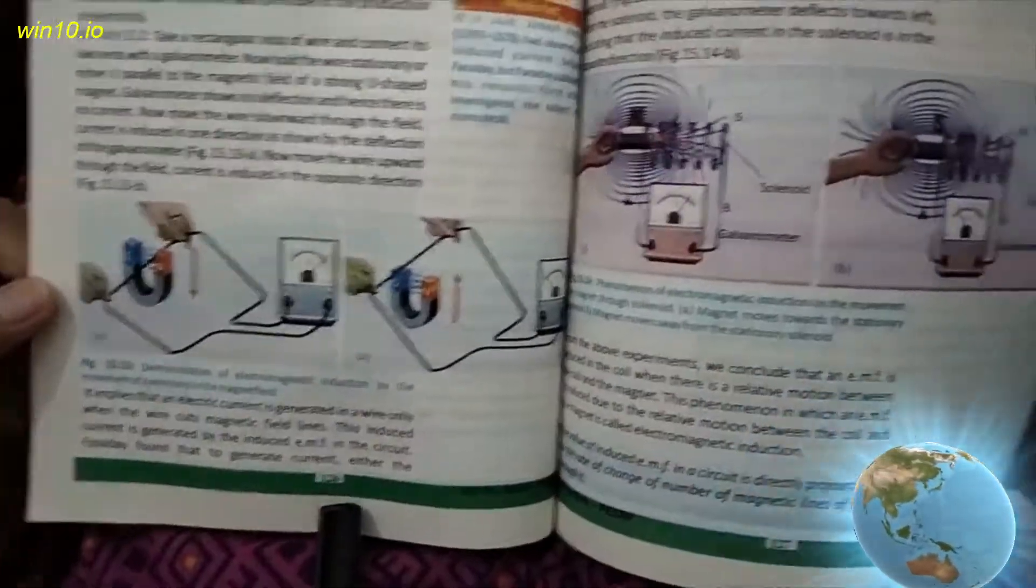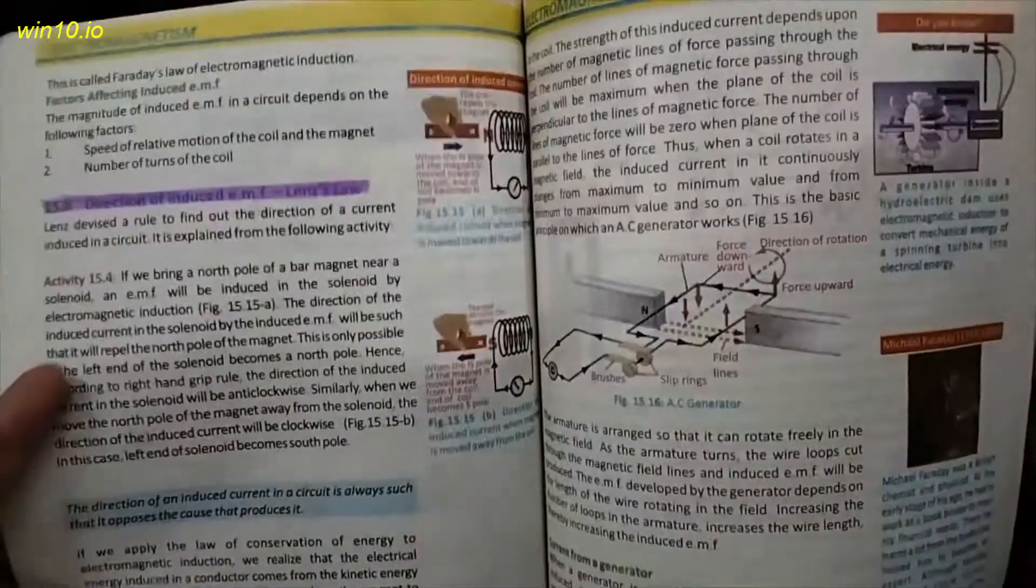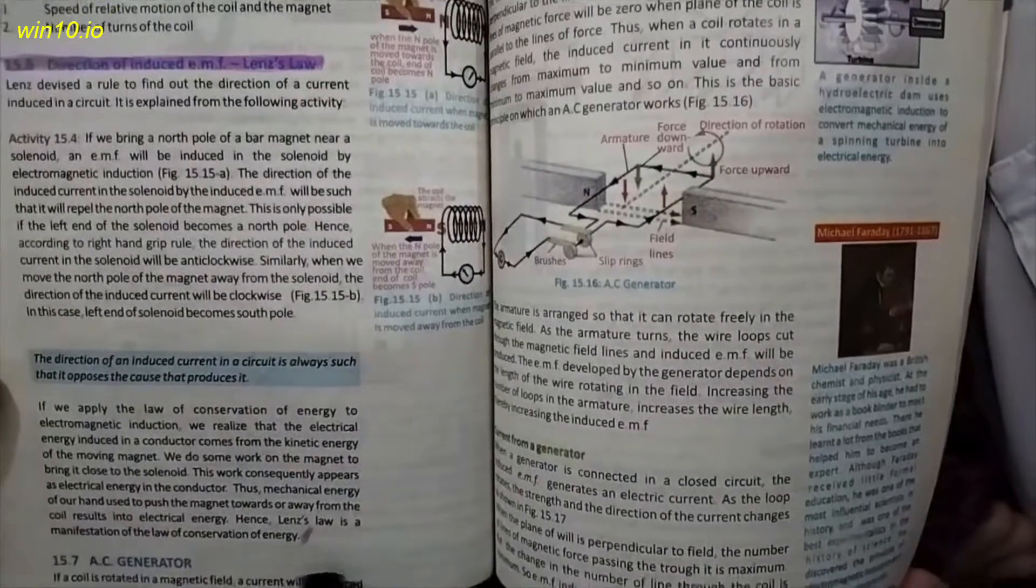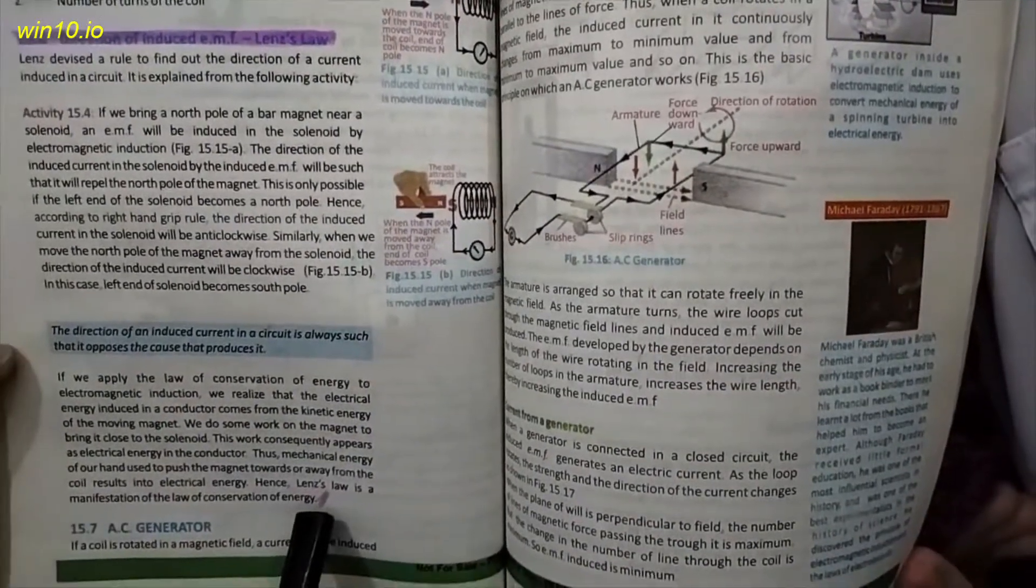Next page number 126, 127. These two topics and next two pages. Page number 128, direction of induced EMF Lenz's law. You'll be doing AC generator up to here complete.